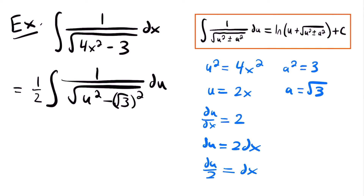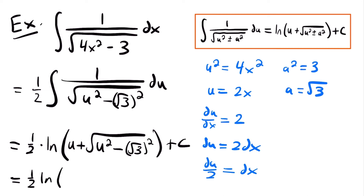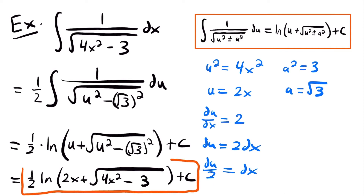And so we'll have that this is equal to one half times the natural log of u plus the square root of u squared minus a squared, which is (√3) squared, plus c. Remember, this is going to be a minus sign because we have a negative sign in our function in our integral, and so those signs need to match up. And so then all we have to do to finish our solution is to replace u with what we set it equal to, which is 2x. So we will have one half times the natural log of 2x plus the square root of 4x squared minus 3, plus c. And that is the final solution to this integral.